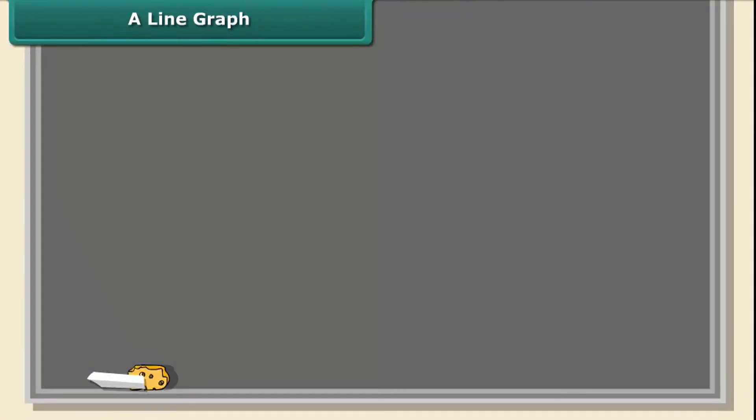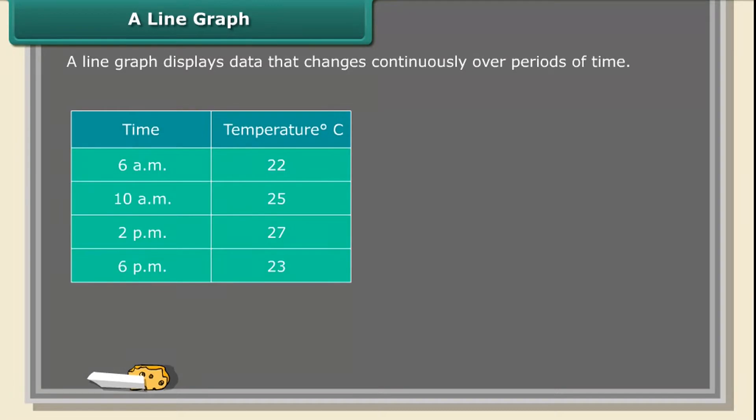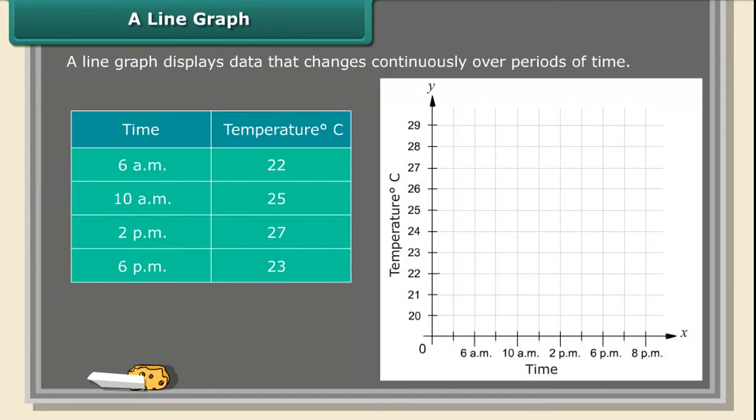A Line Graph. A line graph displays data that changes continuously over periods of time. The above table shows the temperature of Chennai City, taken every four hours for a day.